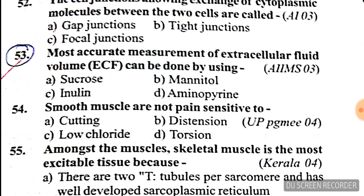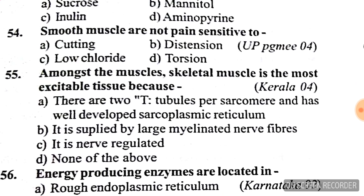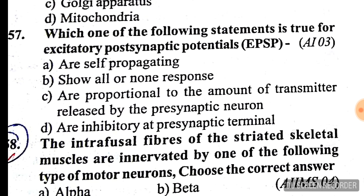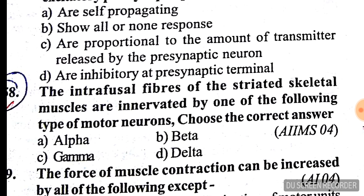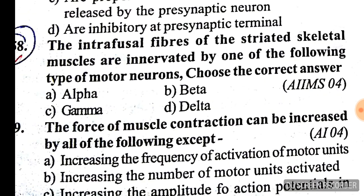— see all four options carefully. The answer is inulin, which is the right answer. Question number 58: the intrafusal fibers of striated skeletal muscles are innervated by which type of motor neuron? The answer for question 58 is C, gamma motor neurons.